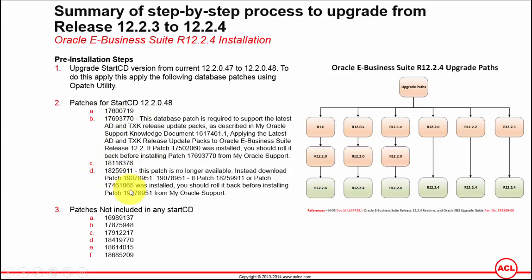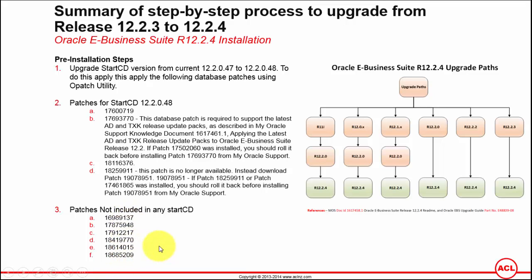This includes patch numbers 17600071, 917693770, 18116376, and 18259911. These are all the patches that constitute the Start CD version 12.2.0.48. In addition to that, you've got to also apply the patches that are not included in any of the Start CDs at all — that includes the seven patches listed here.